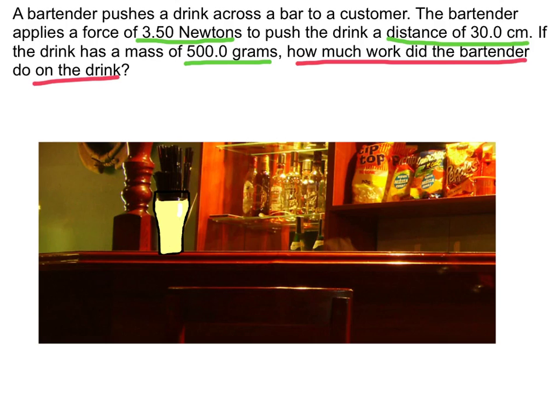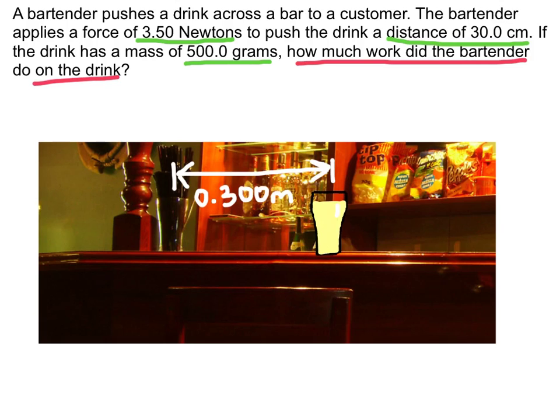So here's what's happening. We have this drink that's moving 30 centimeters down the bar, which is the same as 0.3 meters. And we want to calculate work done. So I know the equation for work. And I also know force, 3.5 newtons, which is going to go here. I know the displacement, 0.3 meters will go in there. And I also know the angle. Since the direction of the force and displacement are the same, the angle is going to be 0 degrees.